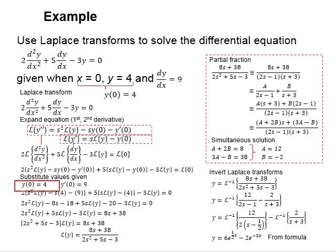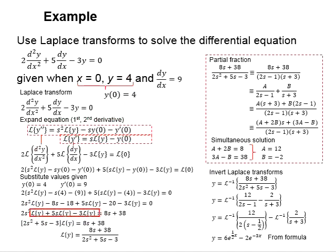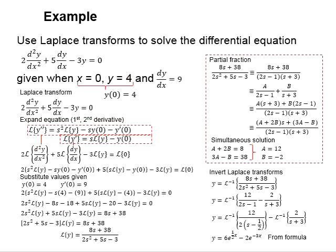Substitute the relevant values for y(0) and y'(0) into the functions and you will get this result. Rearrange the functions, then put the Laplace of y on one side while the remaining terms are on the other side. Take out the Laplace y factor — you will get this expression to be multiplied with L{y}. Move this to the opposite side and you obtain this.